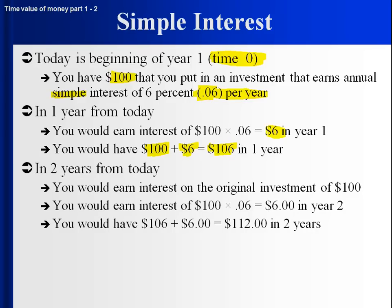How about two years from today? Now it's time to figure out how much interest we add to our account. We know we get 6%, and we have $106 in our account at the beginning of the year, but we don't get to earn interest on that $106. We only earn interest on the original amount — the $100. So in year two we get $6 again. We went into the year with $106, we get $6 during the year, and now we have $112.